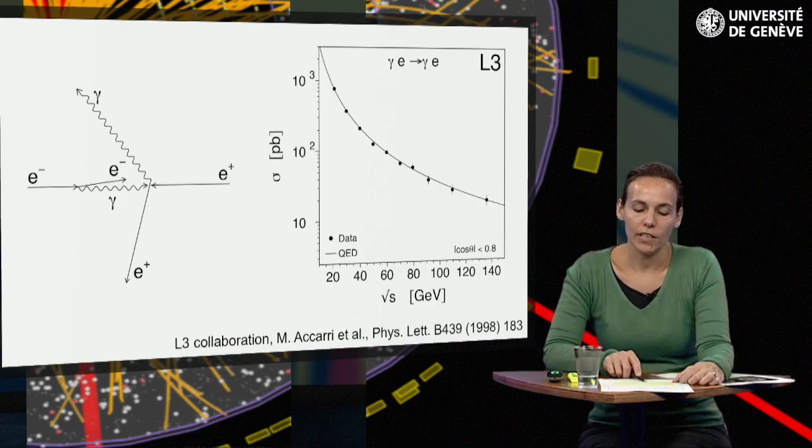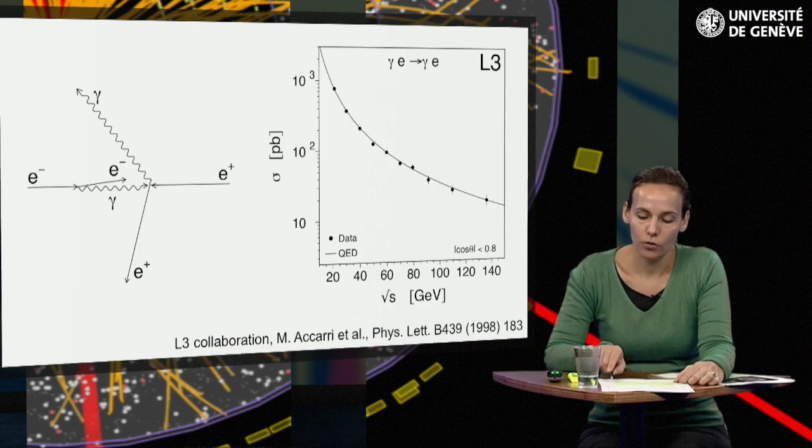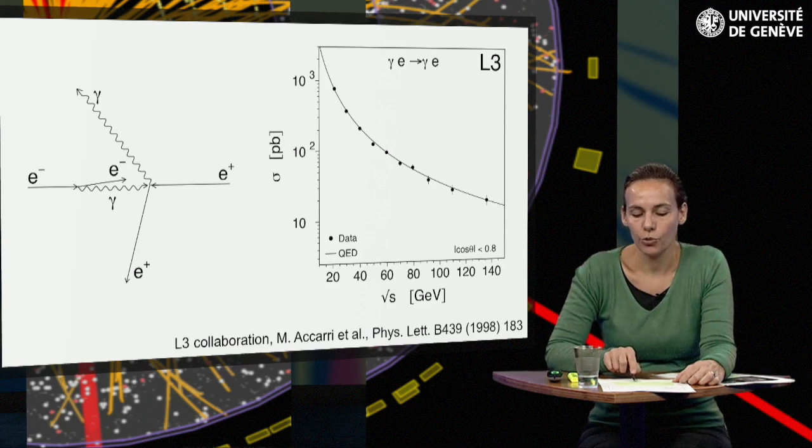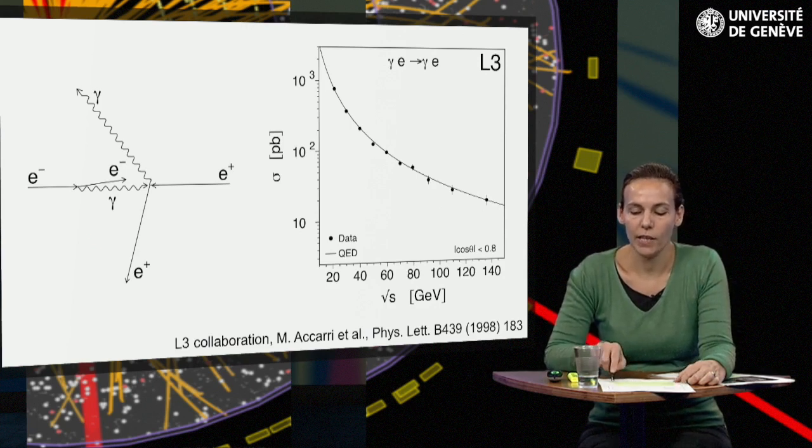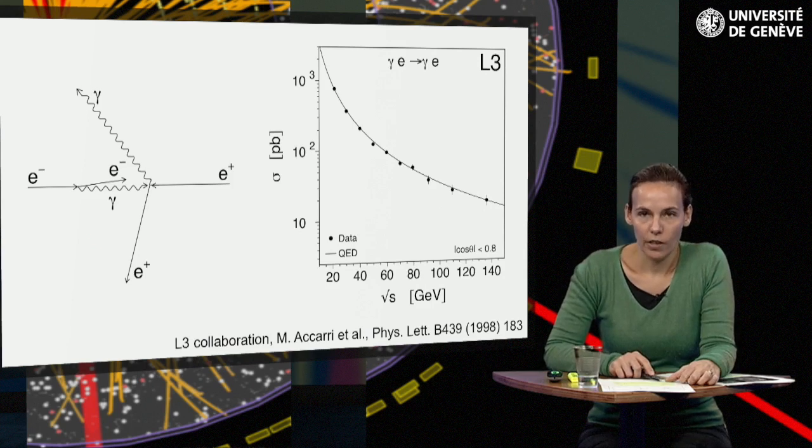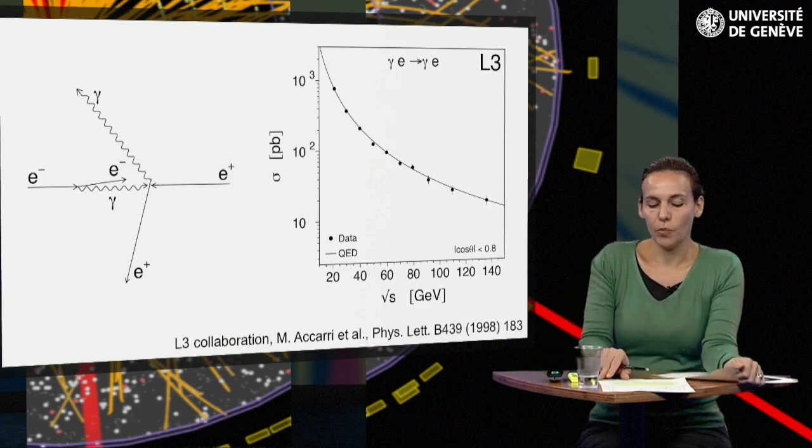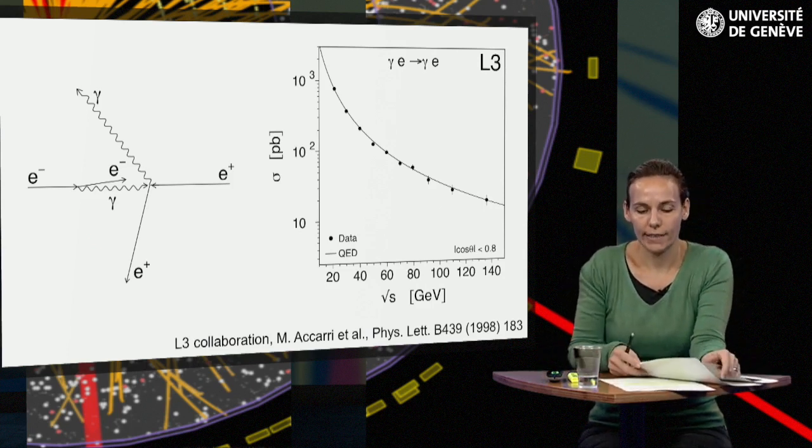The cross-section for Compton scattering with these quasi-real photons measured by the experiment L3 at LEP is shown on the right. The dependence on the initial energy square of s, predicted by the calculation, is in fact observed. It is proportional to 1 over s.